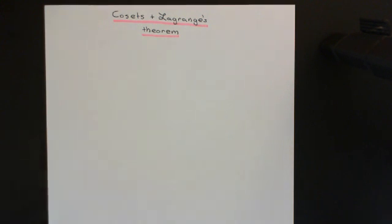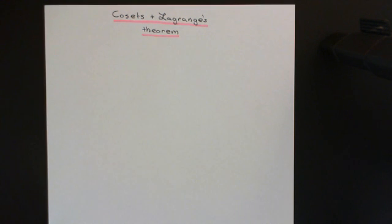Before we move on to our discussion of cosets, let me remind you of a really important property of the composition tables of groups, which we first saw in a previous video in this playlist on group theory — specifically, we saw it in the video on Cayley's theorem.